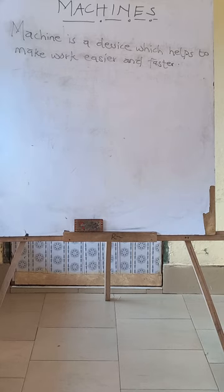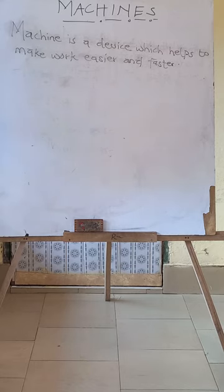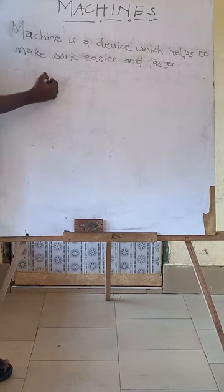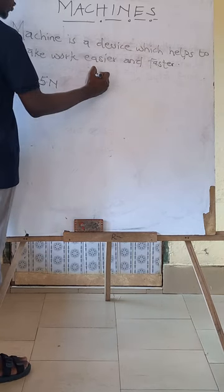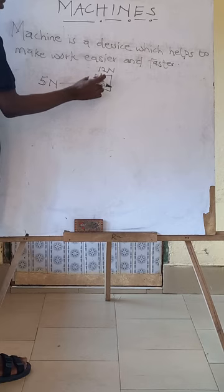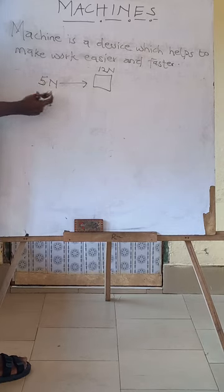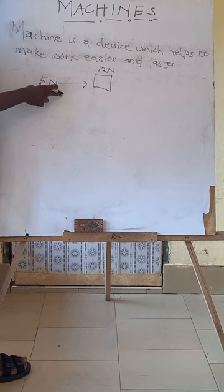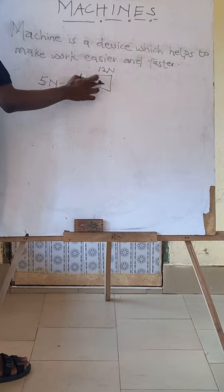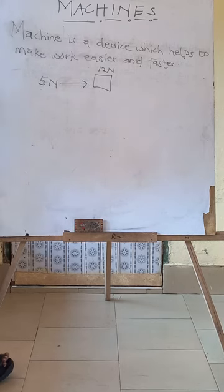A machine works in such a way that when a force is applied to a point, it increases the force at another point. So let's say we apply a force of five newtons to raise an object which requires a force of 12 newtons. A machine can aid in raising this object with a force of five newtons, because when this five newtons is applied to a point on the machine, the machine will increase this force to 12 newtons or higher, in order to raise the object. That's how a machine works — to make the work very easier and faster.